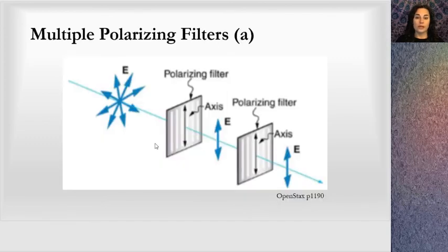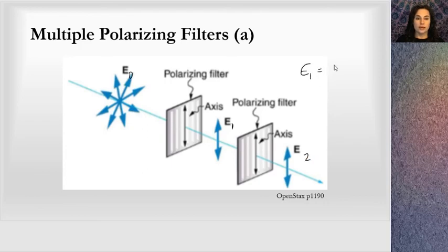Here's another example: we send natural light through a polarizing filter, and then through a second polarizing filter whose axis is oriented in the same direction. In this situation, the two intensities are equal — there's no further reduction in intensity, and the light passes through that second filter with no loss.